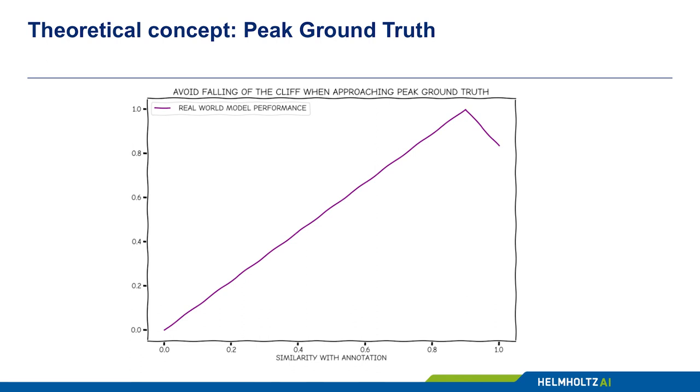Consequently, increasing similarity only corresponds to increased model performance up to a certain point. As a hypothetical similarity of 100% would mean reproducing all potential errors in the annotation, leading to falling off the cliff. This point is defined as PGT.